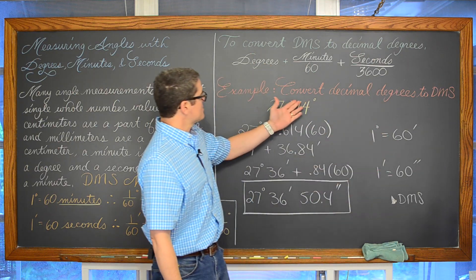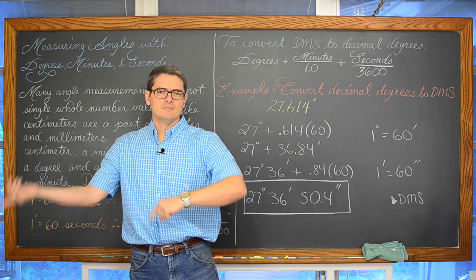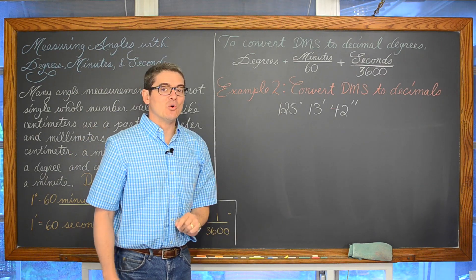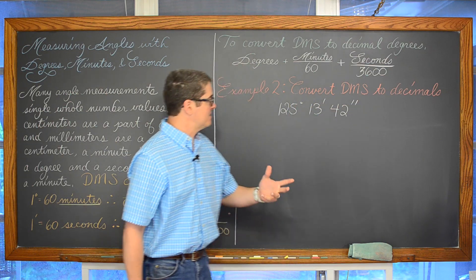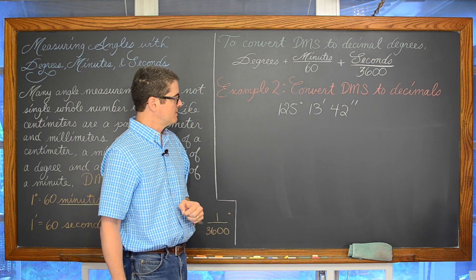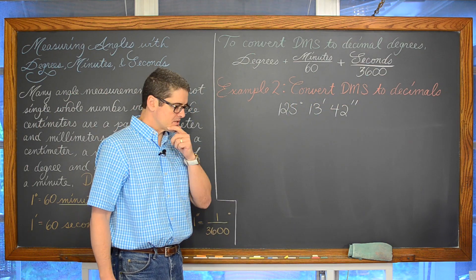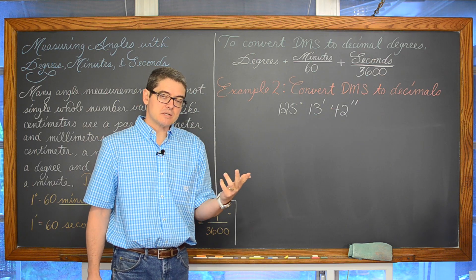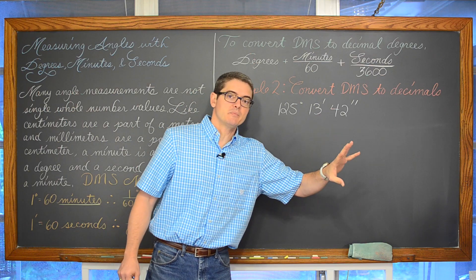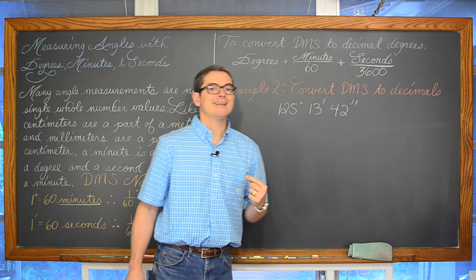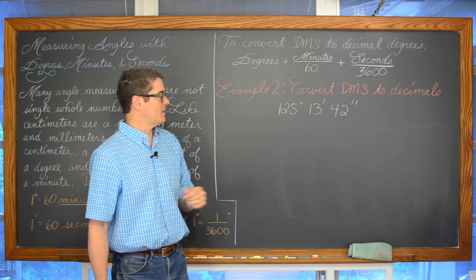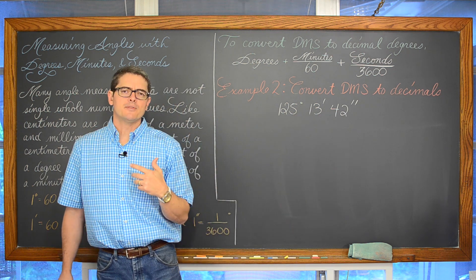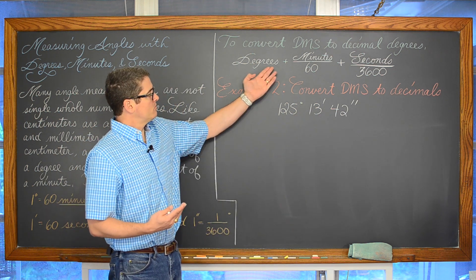Now we did this conversion from decimal degrees to DMS. Let's turn around and convert this angle, which is in DMS format — degree, minute, and seconds — to decimals. In the previous example we had the decimal version, and we multiplied by 60 to find the number of minutes, and the part of those minutes we multiplied by 60 again to get the number of seconds.